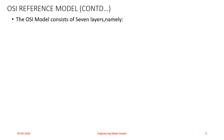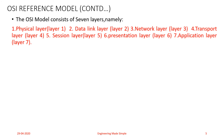The OSI model consists of seven layers: Physical layer, Data Link layer, Network layer, Transport layer, Session layer, Presentation layer, and Application layer.